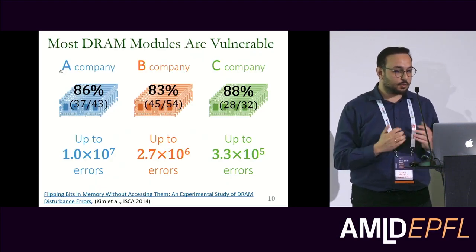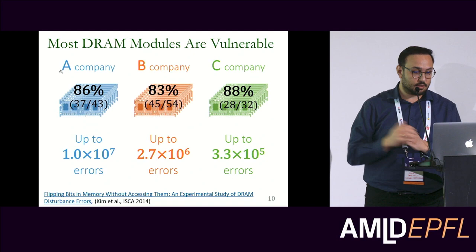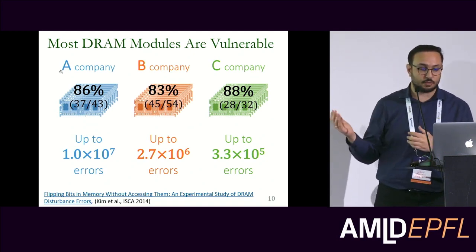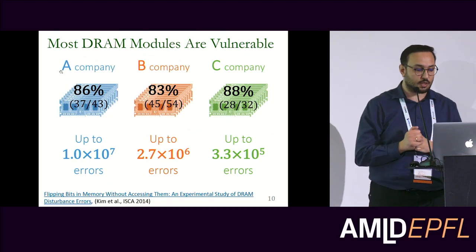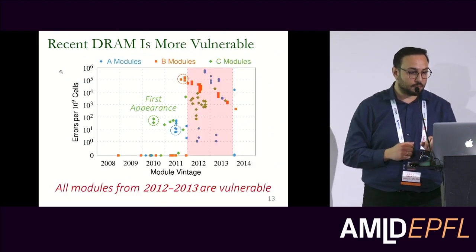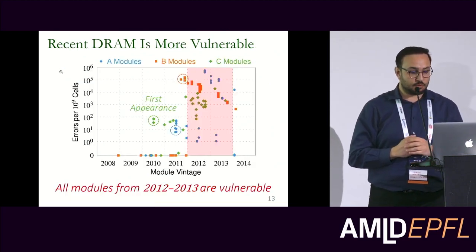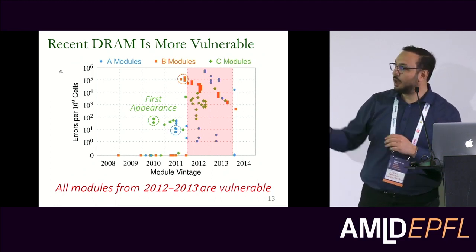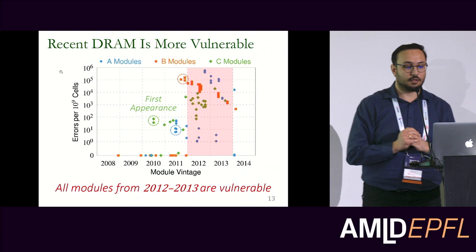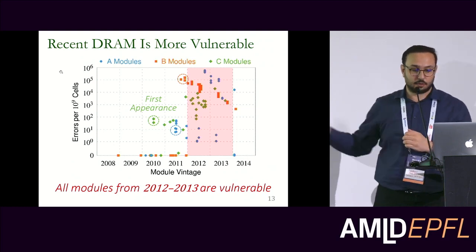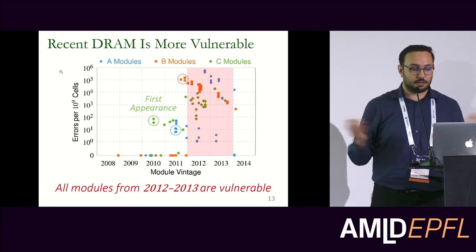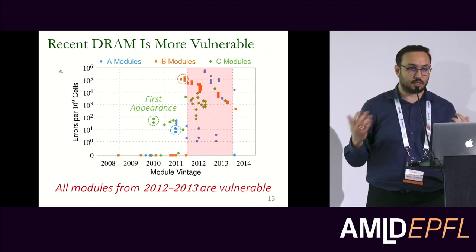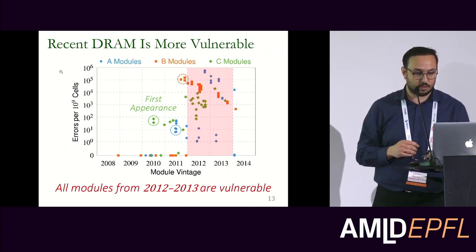This is an important vulnerability. When we look at real DRAM chips in 2014, we saw that most of the DRAM chips from three main manufacturers are showing this vulnerability. Looking at the manufacturing dates, until 2010 we don't see these errors, but starting from 2010, independent of manufacturer, we see a lot of bit flips successfully induced.